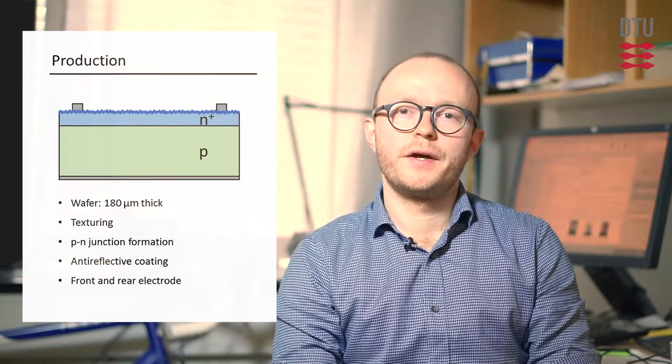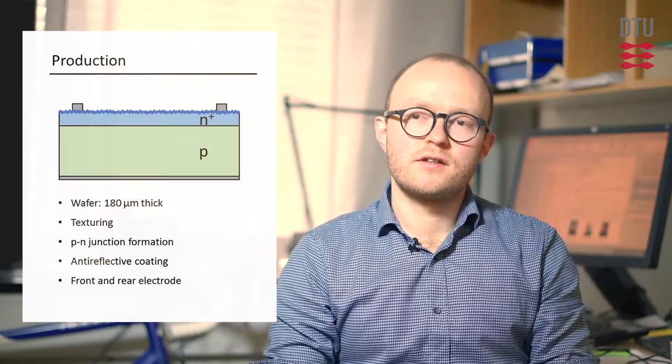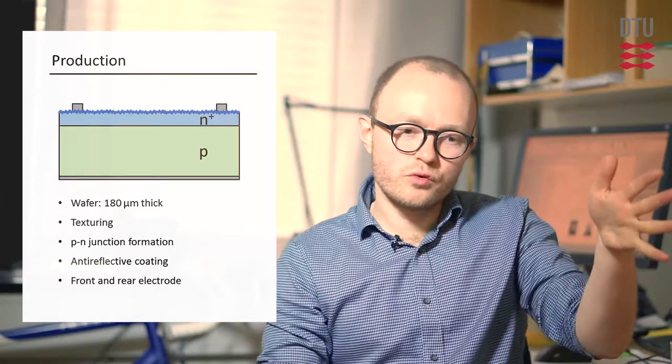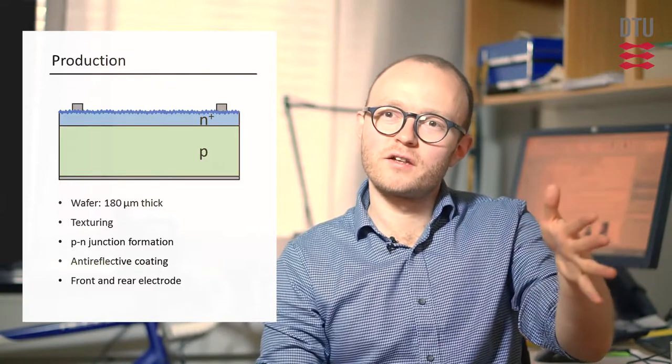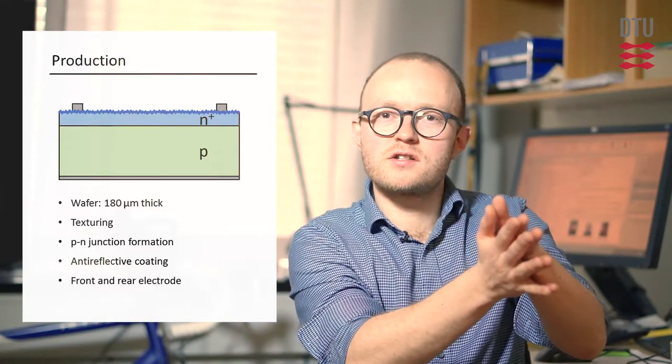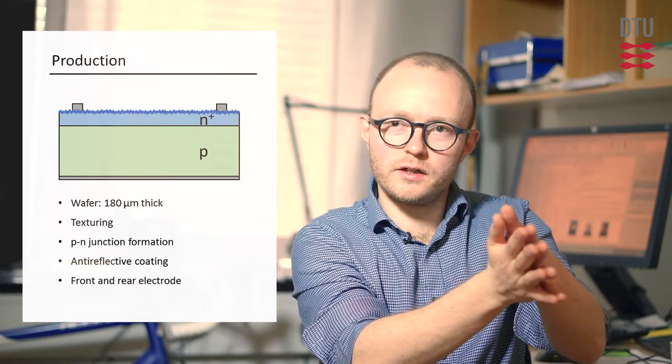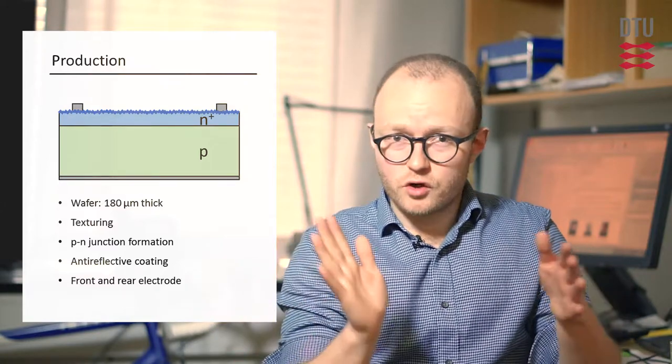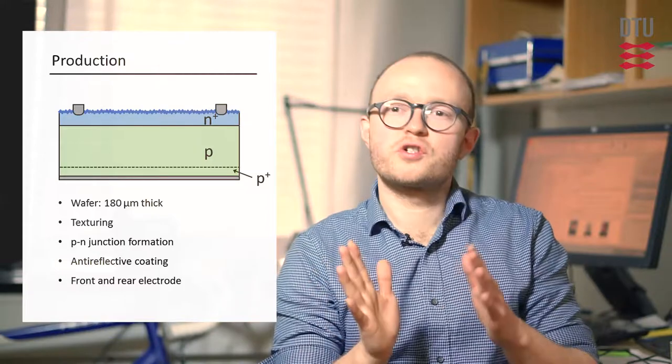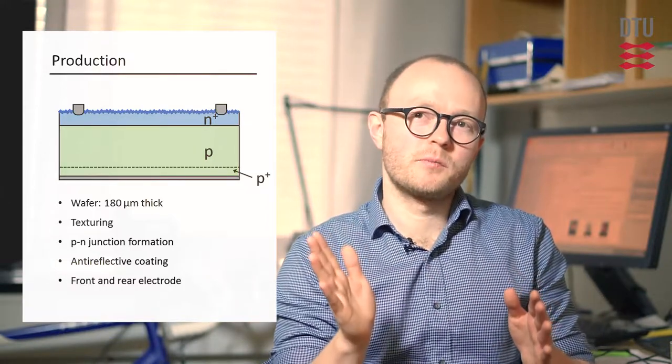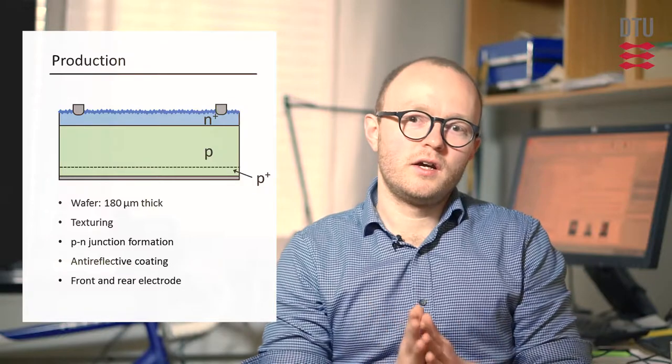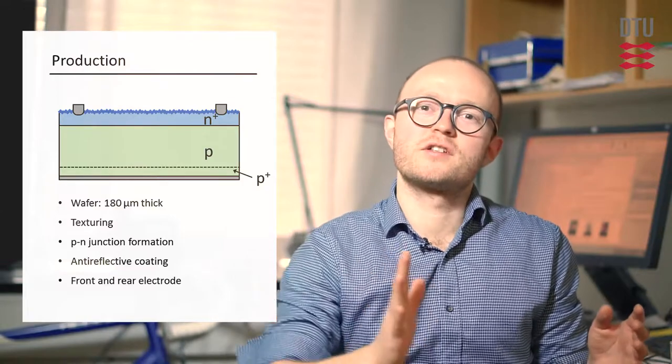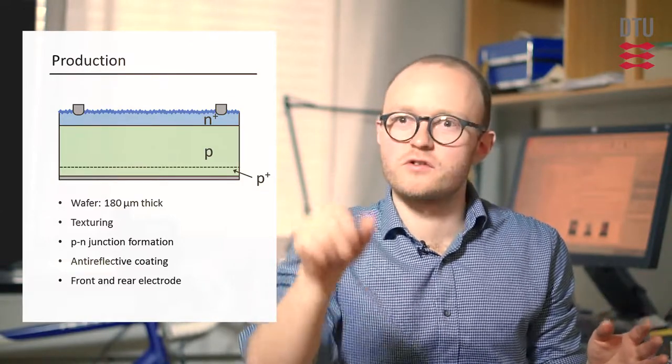And then we can screen print the front and rear contacts. That's typically silver paste on the front that's optimized to etch through the anti-reflective coating and create a nice ohmic contact to the underlying highly-doped silicon. And typically aluminum paste on the rear that makes a good contact to silicon but also dopes the rear side of the silicon p-type. Aluminum is a p-type dopant to silicon, and that means we actually remove the phosphorus doped backside layer in the same process and create a p-plus layer called the back surface field.